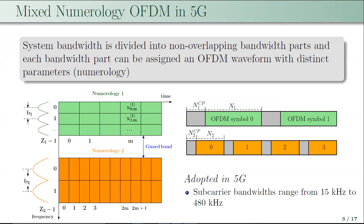In 5G NR, the subcarrier spacing and cyclic prefix length of different numerologies are related by integer powers of 2. The figure on the left shows the resource grid of an OFDM system with 2 numerologies, where the subcarrier spacing of numerology 2 is twice that of numerology 1. The figure on the right shows the time domain representation, where the OFDM symbol duration and cyclic prefix duration of numerology 2 are half of the corresponding durations in numerology 1.